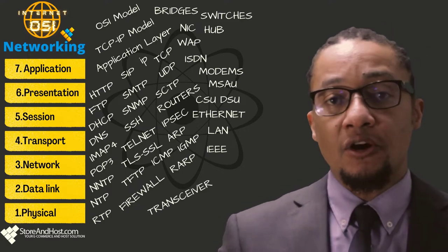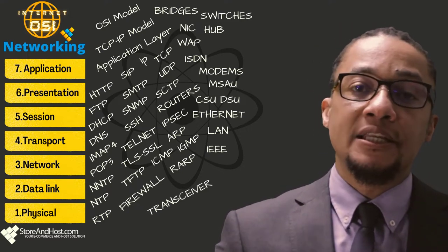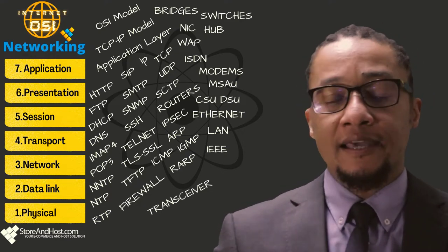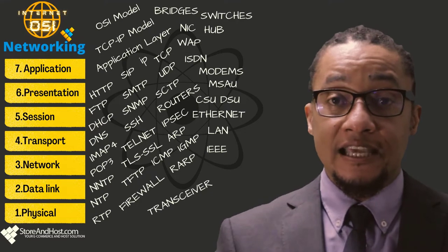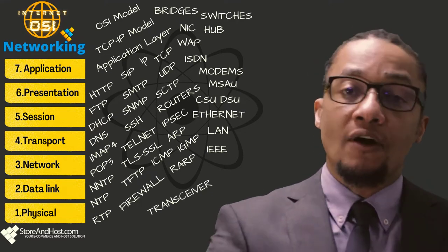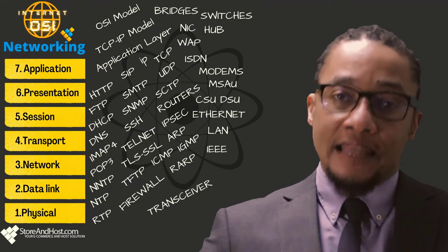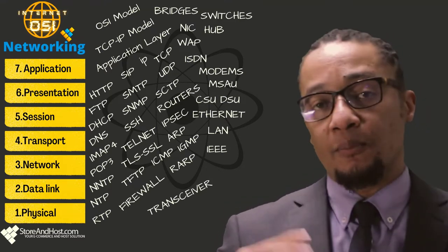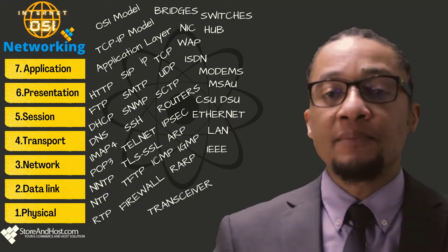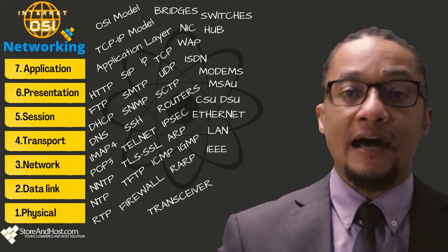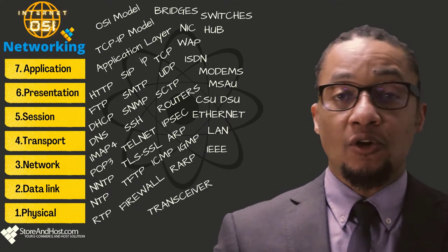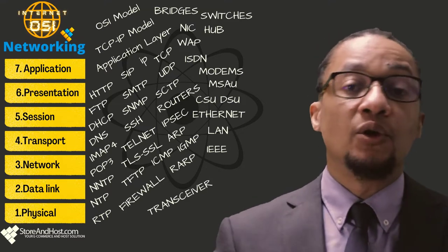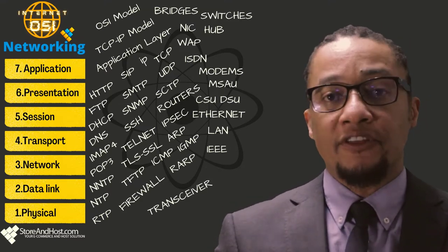The transport layer is the third layer of the four-layered TCP/IP model, positioned between the application layer and the internet layer. Its purpose is to permit devices on the source and destination hosts to carry on a conversation. It defines the level of service and the status of the connection used when transporting data. The main protocols in the transport layer are TCP (Transmission Control Protocol) and UDP (User Datagram Protocol).